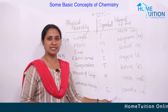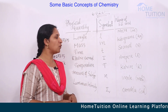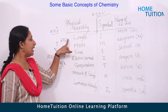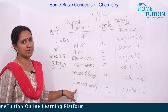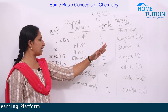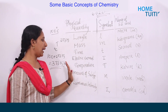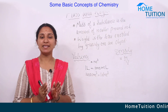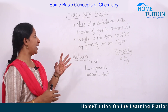Luminous intensity is represented by Iᵥ and its unit is the candela. To recap, the seven fundamental SI units are: length (meter), mass (kilogram), time (second), electric current (ampere), temperature (kelvin), amount of substance (mole), and luminous intensity (candela).